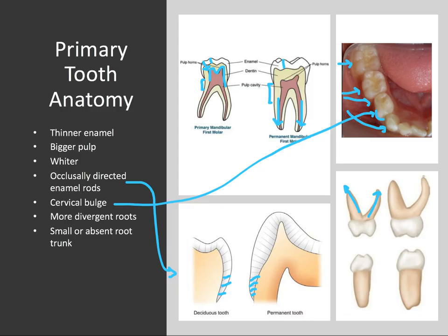Primary teeth tend to be wider mesiodistally and shorter incisogingivally than their permanent successors. So those are some high yield facts to know about primary teeth, and the helpful thing is that a lot of these — bigger pulp, whiter appearance, and others — all relate back to them having thinner enamel. That's definitely the key takeaway.